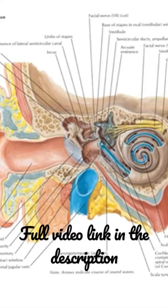Next, we will see about the boundaries of the tympanic cavity. It is roughly cuboidal and presents six walls.